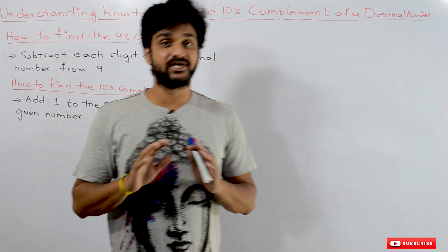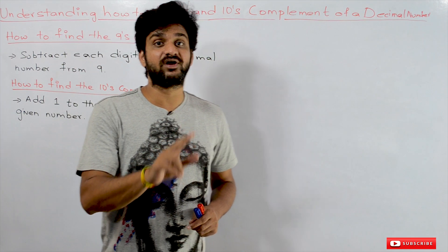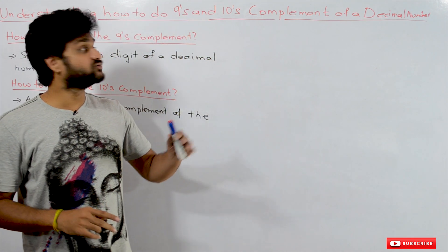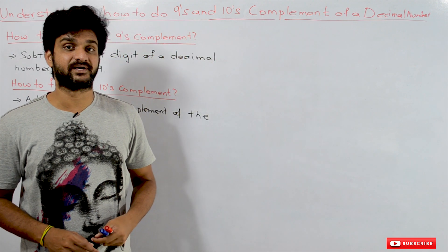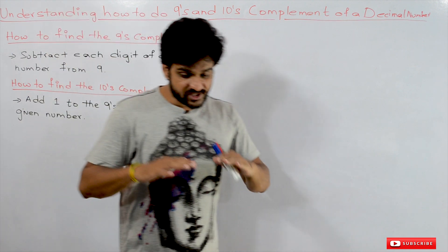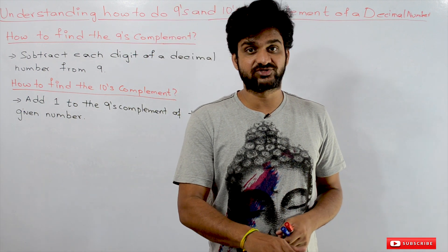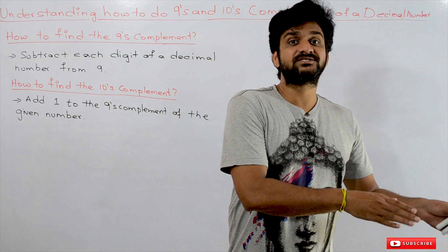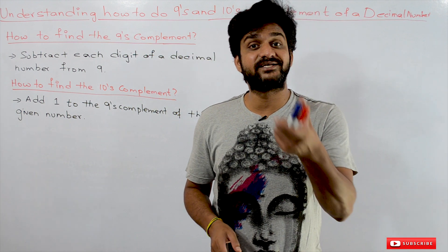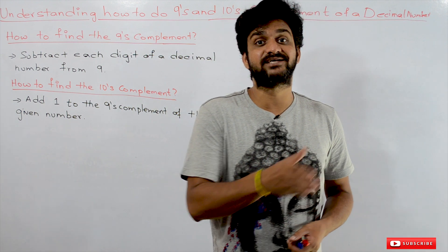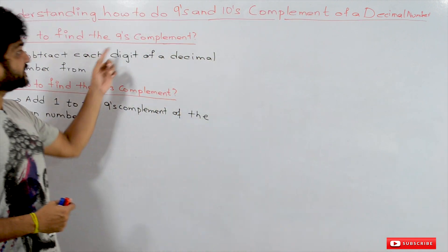That other method is done by using the 9th complement and 10th complement of a decimal number. So in this class we will try to understand how to do the 9th complement and 10th complement. In the next class we will try to understand how to subtract decimal numbers by using 9th and 10th complement.